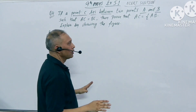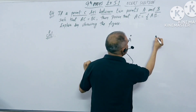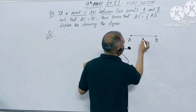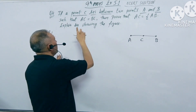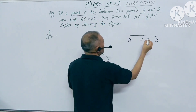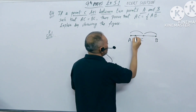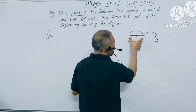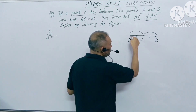First of all, let's draw the figure. We have a point A and another point B. Now we make a point C between A and B. The question states that the distance AC is equal to BC. We have to prove that AC is half of AB.